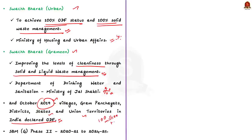After that, the Union Government in 2020 announced Swachh Bharat Mission Gramin Phase 2, to be implemented from 2020-21 to 2024-25. Phase 2 also focuses on the same objective as Phase 1 and ensures that no one is left behind and that everyone uses the toilet.